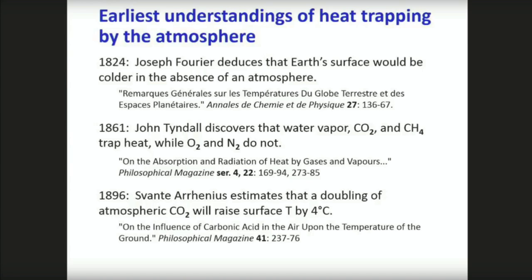Joseph Fourier in 1824 deduced that the Earth's surface would be warmer in the presence of an atmosphere. That was followed by John Tyndall in 1861, who figured out that water vapor, CO2, and methane trap heat while oxygen and nitrogen don't. And then the famous 1896 paper by Arrhenius, who was the first to offer a quantitative estimate of how much a doubling of atmospheric CO2 would raise the surface temperature — he came up with four degrees C, on rather flimsy evidence.